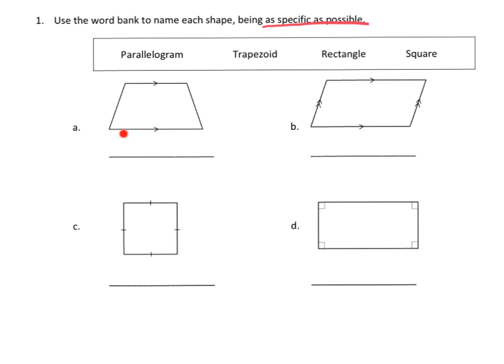So I look at this figure. I see that it's got one pair of parallel lines. These are not parallel at all. So that means it can't be a parallelogram or a rectangle or a square. So by process of elimination, it is a trapezoid. And sure enough, it is. It's a trapezoid.